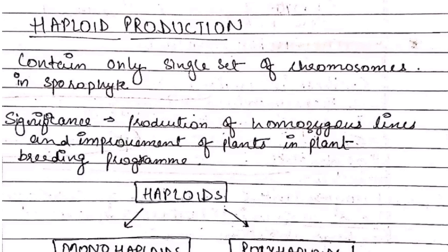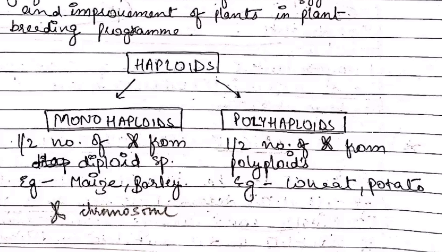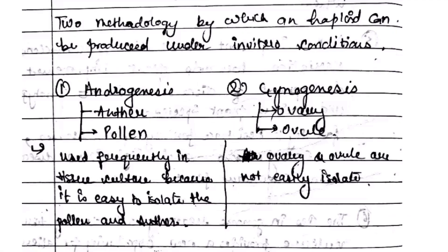Haploid basically refers to gametophytes which contain a single set of chromosomes, and it is used in the production of homozygous lines and improvement of plants in plant breeding programs. Haploids are of two types: monohaploids and polyhaploids. Monohaploids have half the number of chromosomes from diploid species — an example is maize. Polyhaploids have half the number of chromosomes from polyploids — an example is wheat.